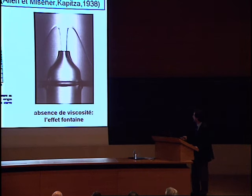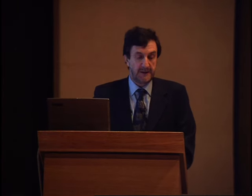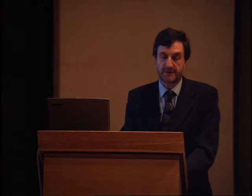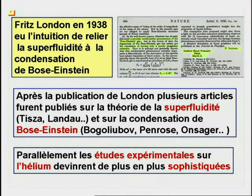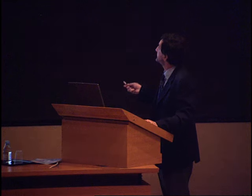Kapitza introduit le terme superfluide pour qualifier cette nouvelle phase de la matière. L'effet fontaine, ici montré, est une conséquence spectaculaire de la superfluidité. C'est peu après la découverte de la superfluidité que le physicien Fritz London a eu l'intuition de relier le comportement superfluide à la condensation de Bose-Einstein, phénomène qui n'avait pas encore été considéré sérieusement par la communauté scientifique. On voit ici la publication de London, à l'époque chercheur de l'Institut Poincaré à Paris.